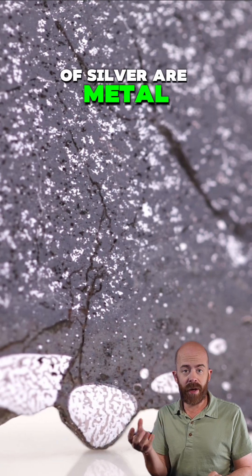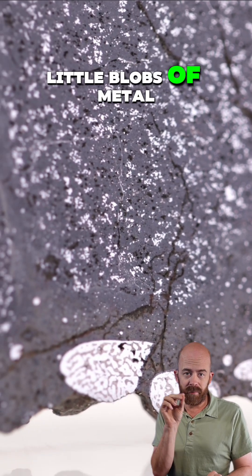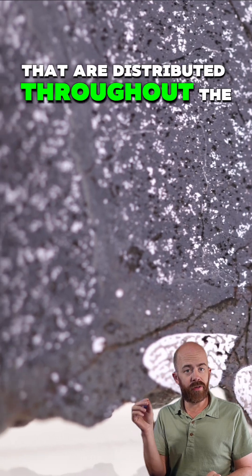Those little flecks of silver are metal, and we even see a few metal blebs, little blobs of metal that are distributed throughout the meteorite.